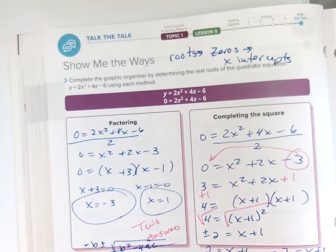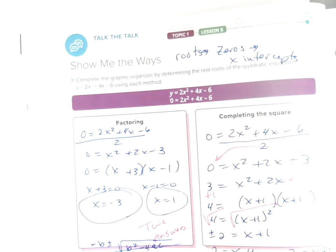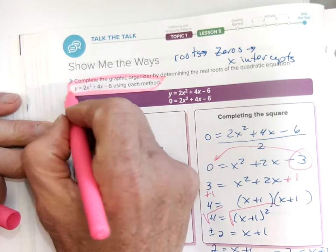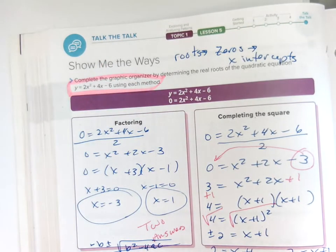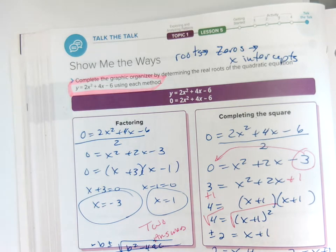In our book, we looked at four different ways to get the same answer from the same problem. We started with y = 2x² + 4x - 6, and we're going to use each method to get the answer and see which one we like.